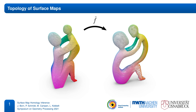Nevertheless, if the sampling approximates some homeomorphism well enough, we can intuitively guess the topology of the approximated map. In this work, we propose an automatic method to recover this information.